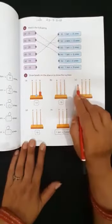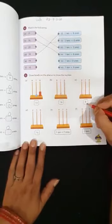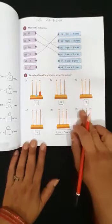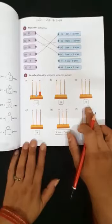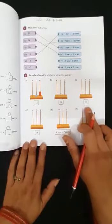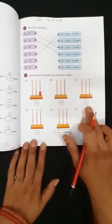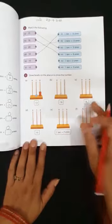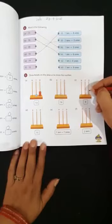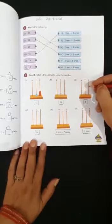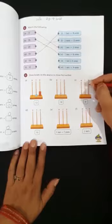Now come to the next C. 8. Here only 1 digit number. It means only 8 ones. So we will draw 8 beads on the ones place. 1, 2, 3, 4, 5, 6, 7, 8.